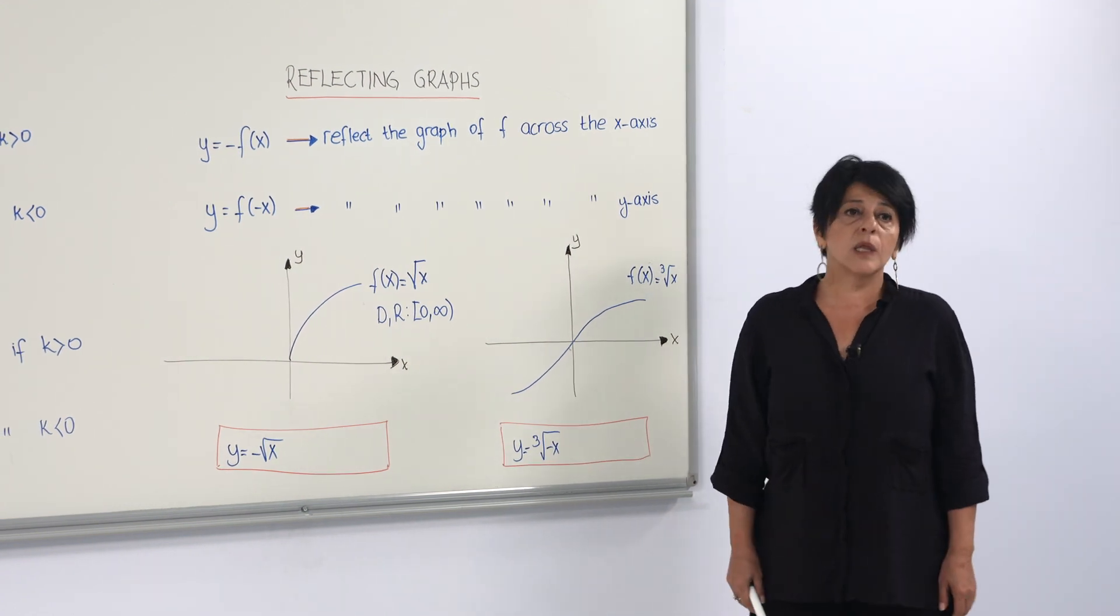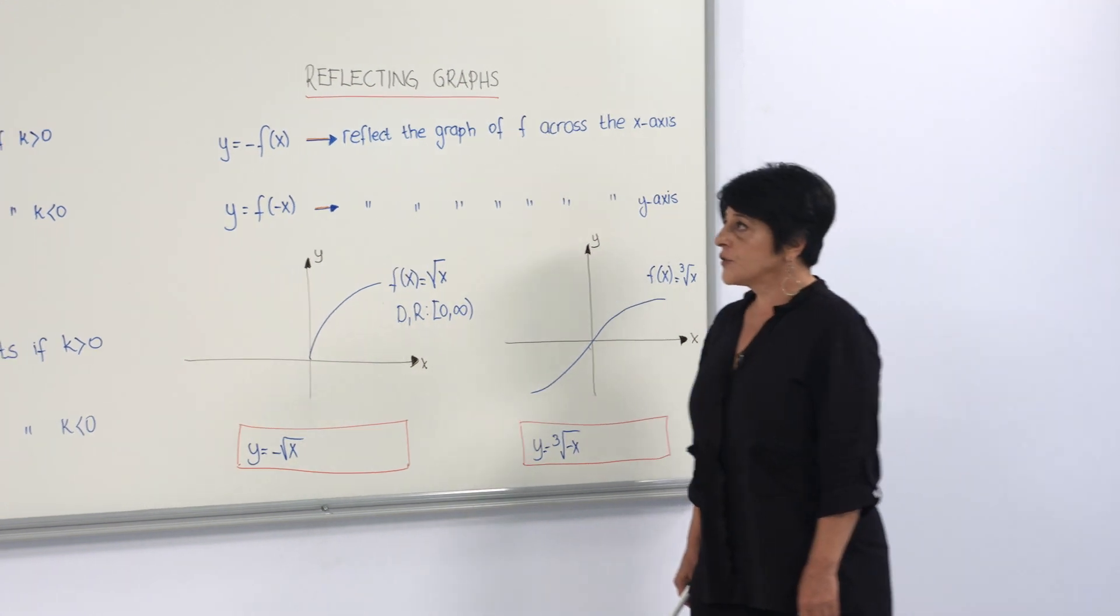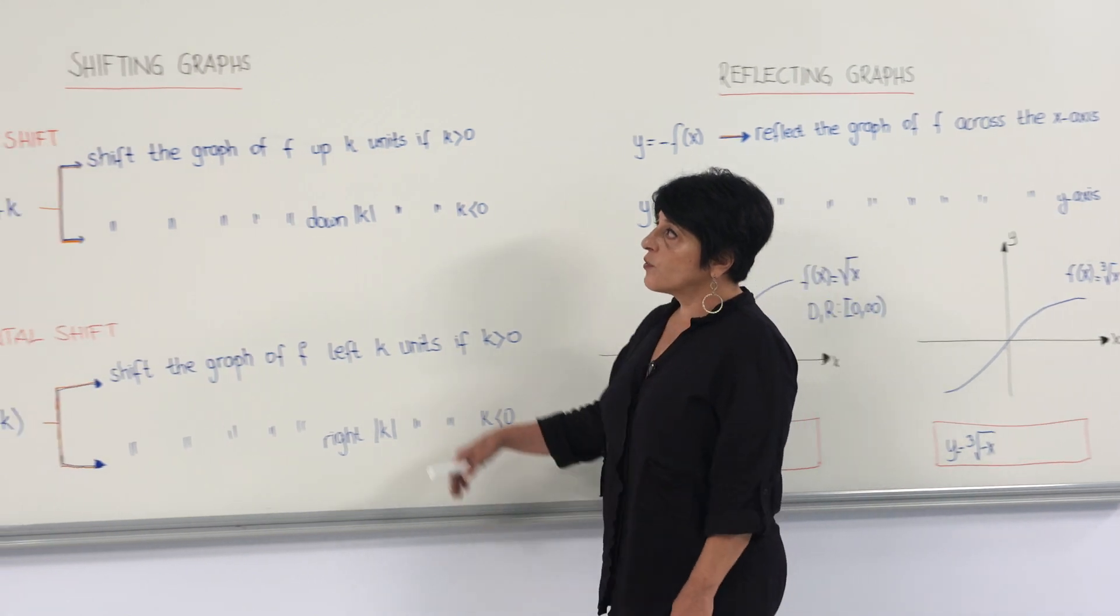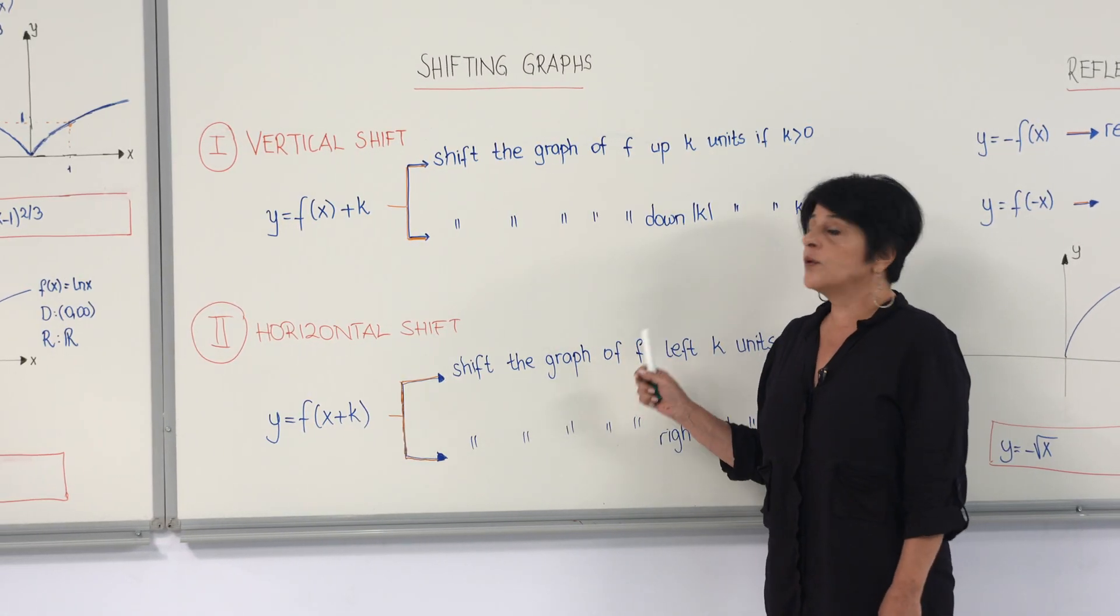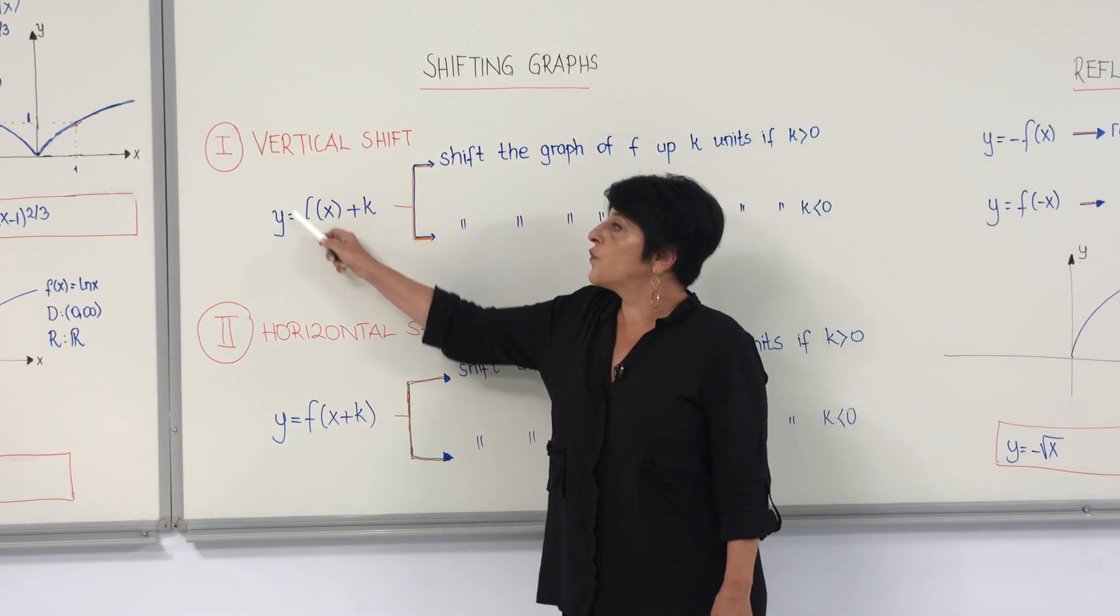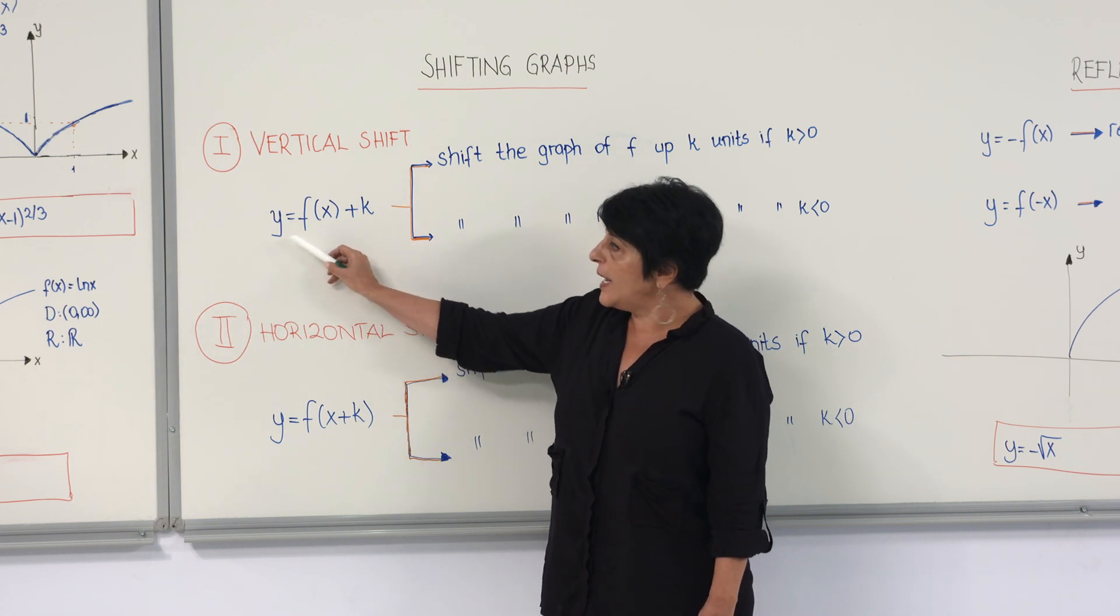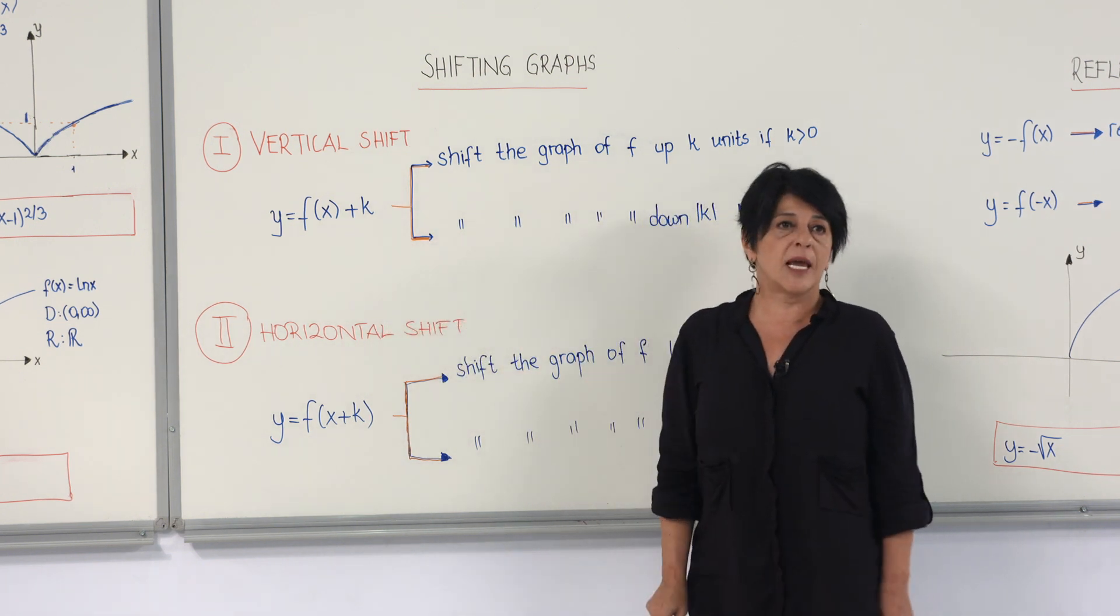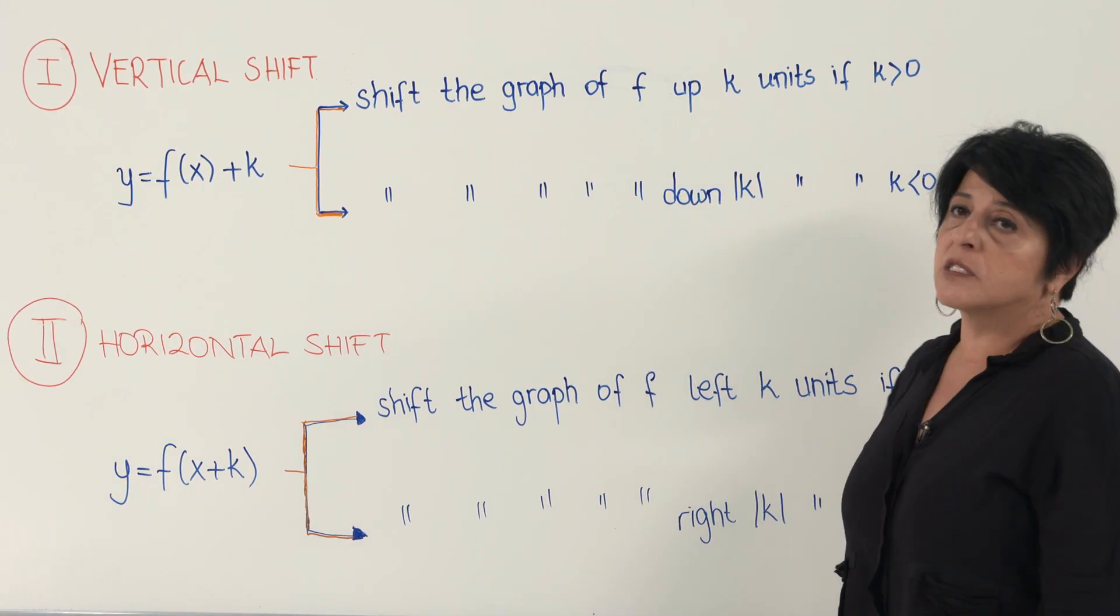Now, once we learned about the commonly used graphs, now we can concentrate on shifting graphs. Actually, we categorize shifting graphs in two cases: vertical and horizontal. In both cases, you know the graph of f. And if you want a graph of y equals f(x) plus k, the only thing you need to decide if k is positive or negative.